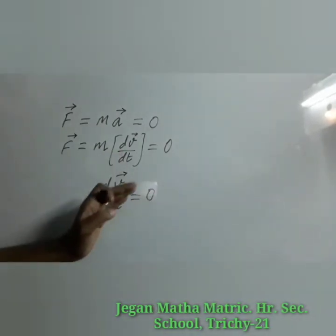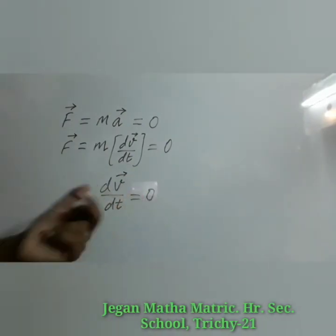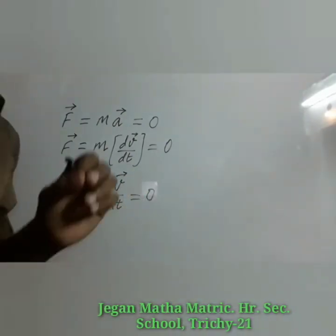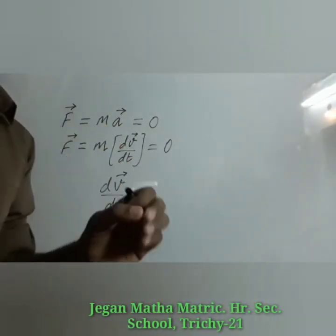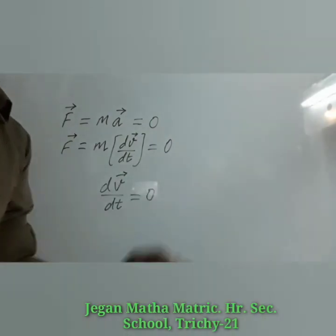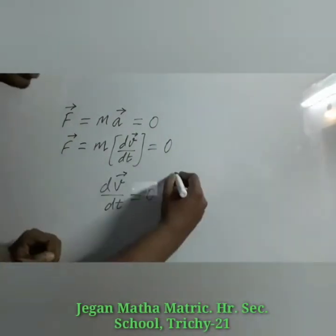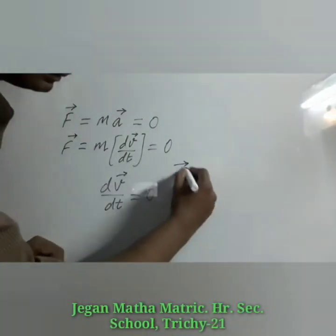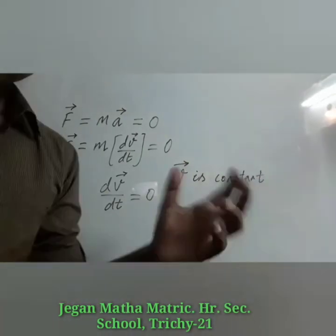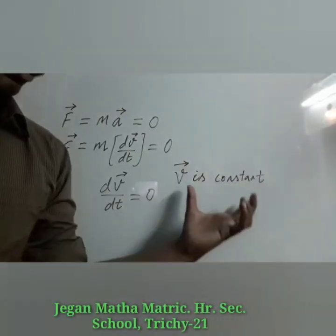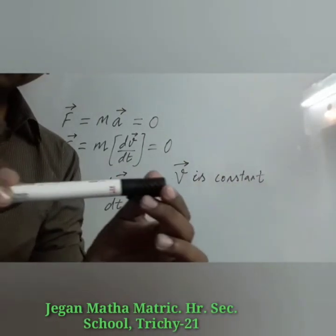When the derivative of a quantity is zero after differentiation, that quantity must be a constant value. For this condition, v vector is a constant value.